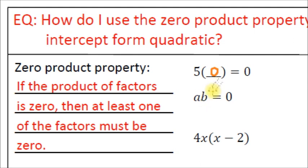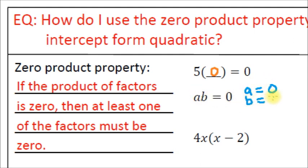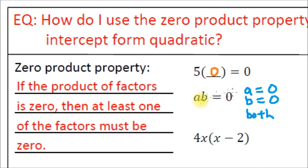Take a look at this: if I told you that a times b equals zero, then you would know that either a equals zero — zero times anything gives you zero — or b equals zero. One of those two variables has to be zero for the whole thing to change to zero. In fact, both of them could also be zero, because zero times zero is also zero.